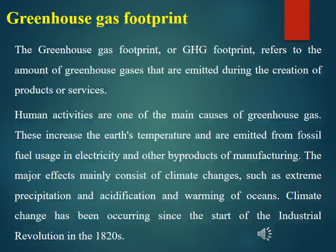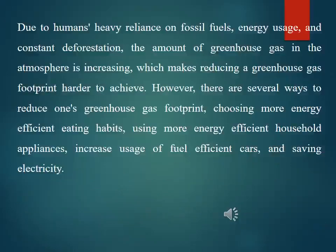The major effects mainly consist of climate changes such as extreme precipitation and acidification and warming of the ocean. Climate change has been occurring since the start of the industrial revolution in the 1820s. Due to humans' heavy reliance on fossil fuel energy usage and constant deforestation, the amount of greenhouse gas in the atmosphere is increasing. However, there are several ways to reduce one's greenhouse gas footprint: choosing more energy-efficient eating habits, using more energy-efficient household appliances, increasing usage of fuel-efficient cars, and saving electricity.